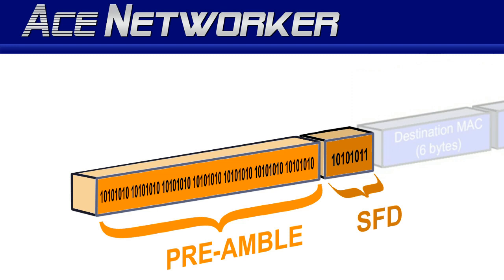Technically, the frame preamble overall is eight bytes including the SFD — seven bytes of alternating ones and zeros, then the last byte which is the SFD ending in one one.